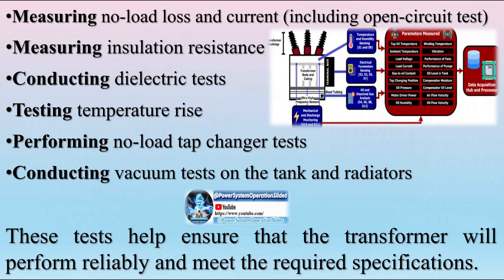Type tests also include conducting dielectric tests, testing temperature rise, performing no load tap changer tests, and conducting vacuum tests on the tank and radiators. These tests help ensure that the transformer will perform reliably and meet the required specifications. Routine tests are conducted to verify and confirm the operational performance of each transformer in a production lot, performed on every manufactured unit excluding the temperature rise test and vacuum tests.